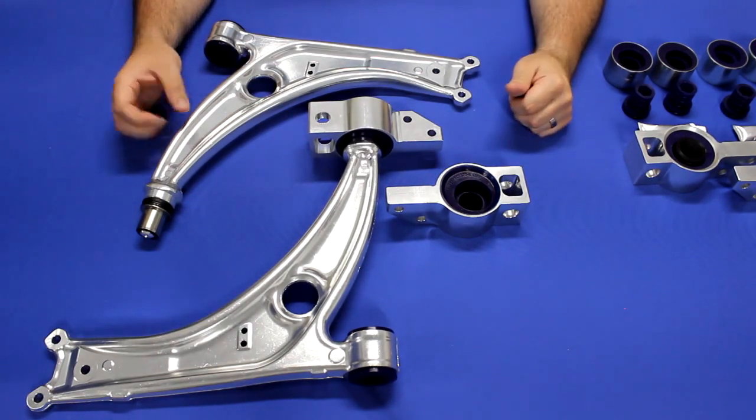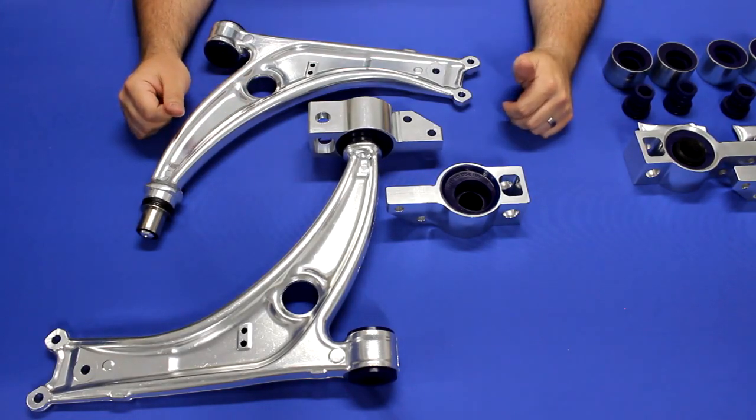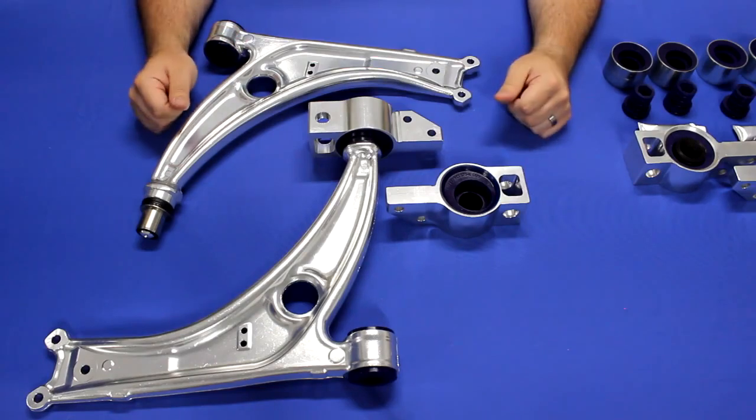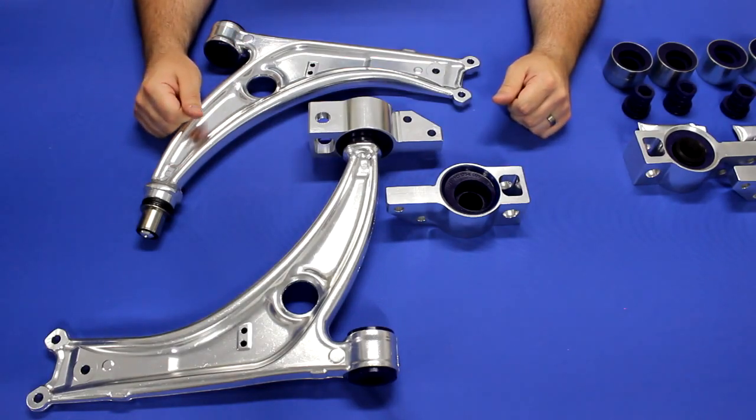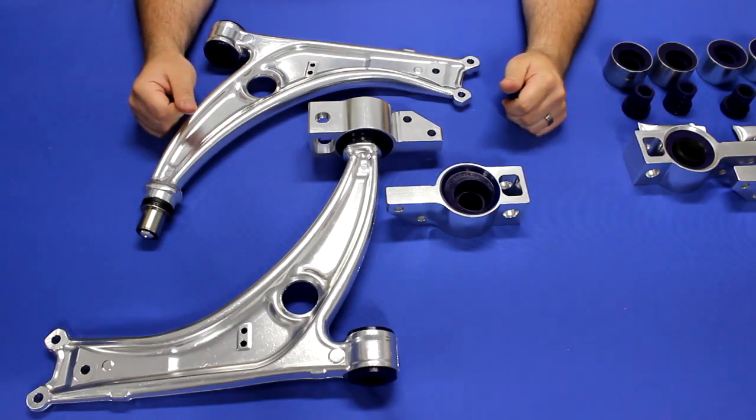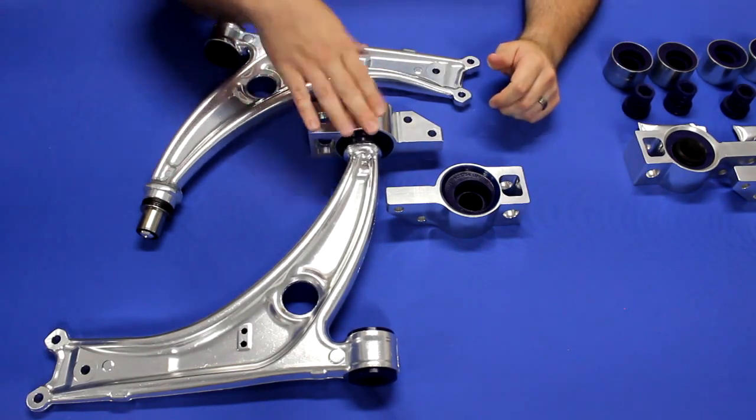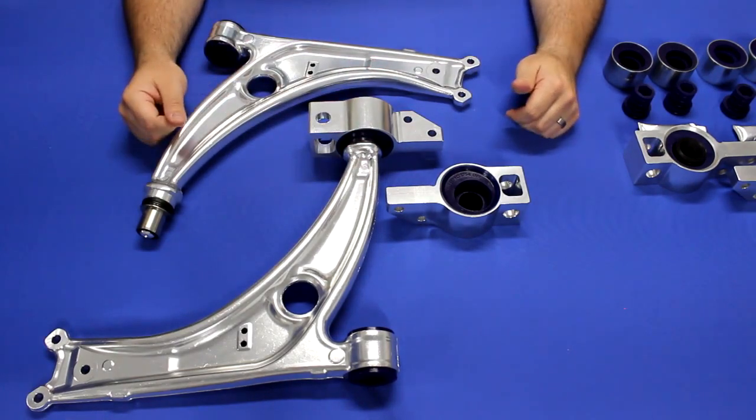If you have a Mark V platform car, these save you around five pounds per corner of unsprung weight. If you've got a Mark VI, it's more in the order of two pounds. That car uses a lighter steel arm from the factory. This kit, while more expensive, will also save you some install dollars. It swaps in as a complete lower control arm assembly with the rear and the front bushing, as well as the arm itself.